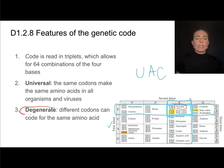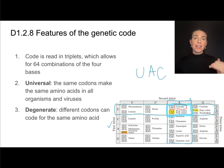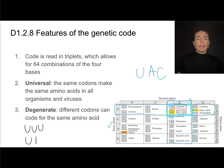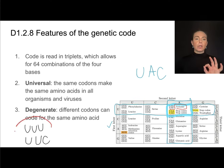The genetic code is also degenerate. In this context, that's actually a good thing — it means that different codons can code for the same amino acid. For example, the codon U-U-U makes phenylalanine. If there's a mutation that changes it to U-U-C, that also makes phenylalanine. So degenerate means different codons can code for the same amino acid, which is a huge advantage in case you have a mutation, because that mutation might not actually result in a change in the amino acid sequence.